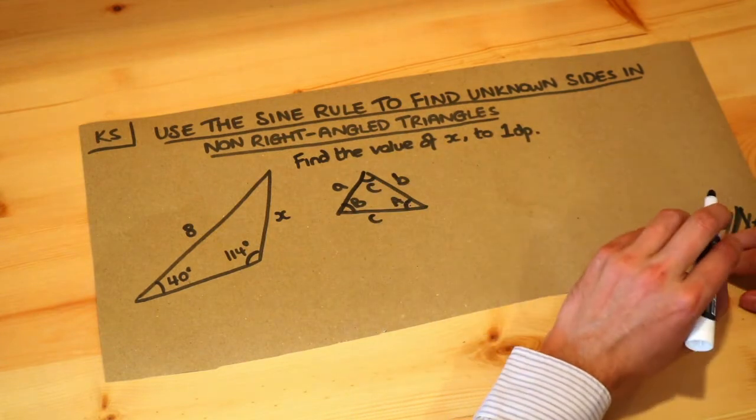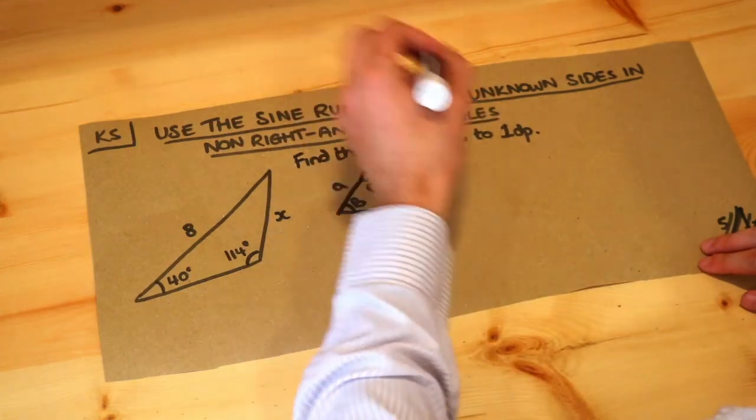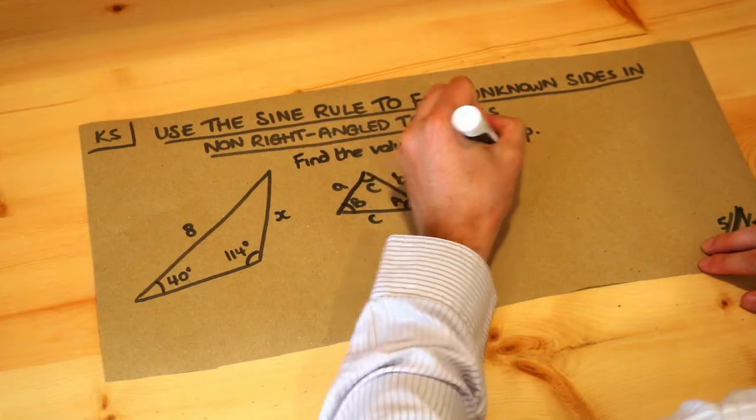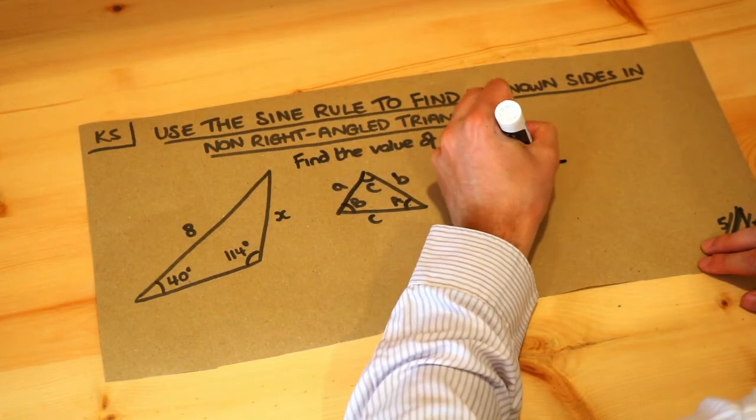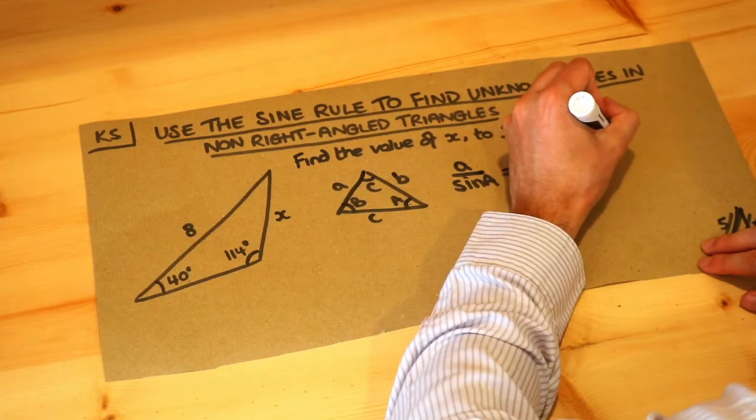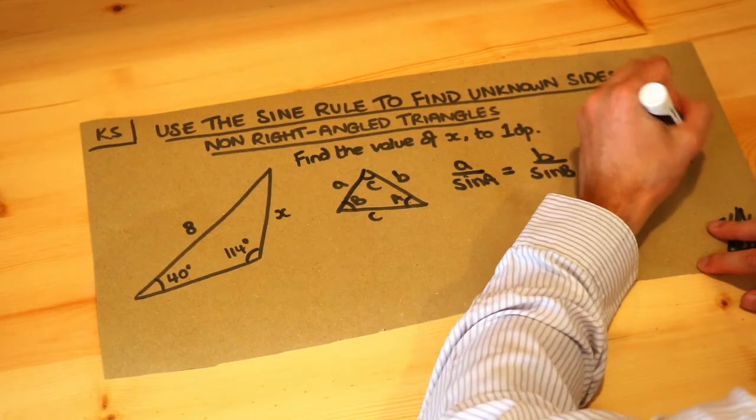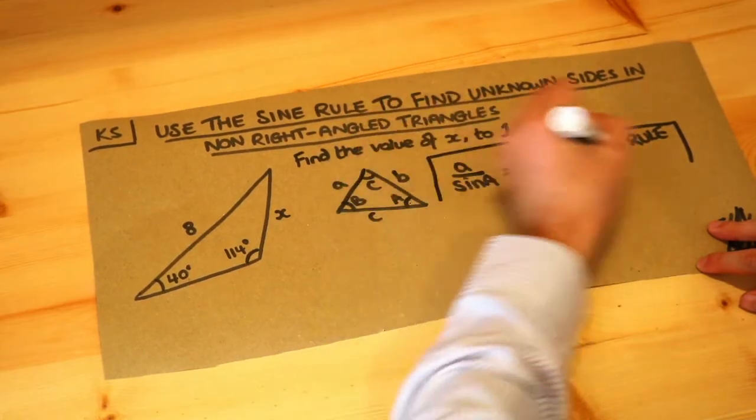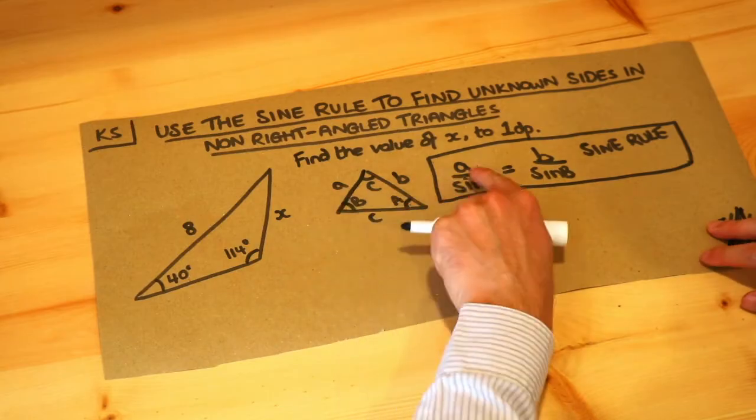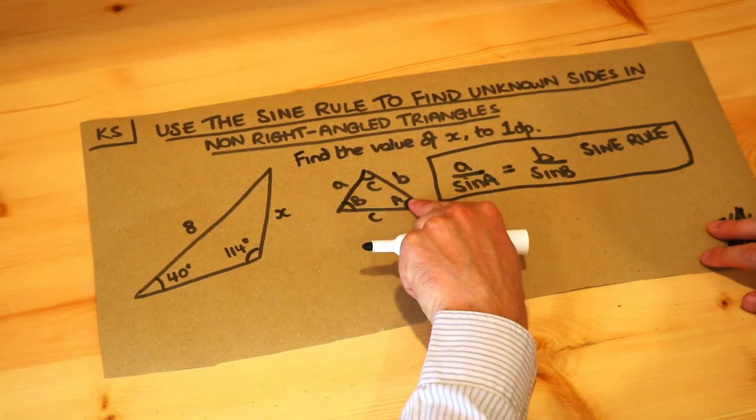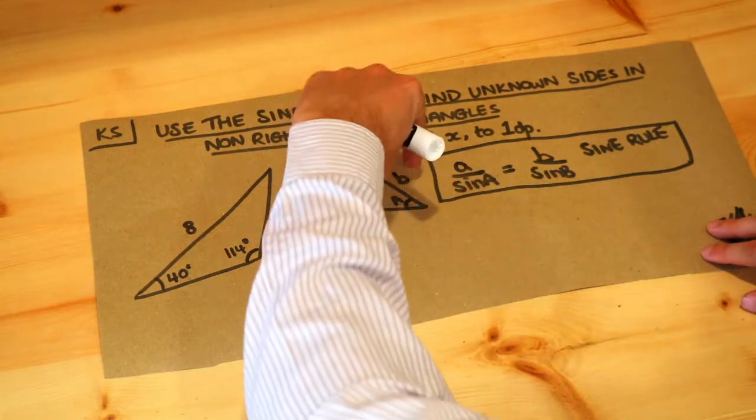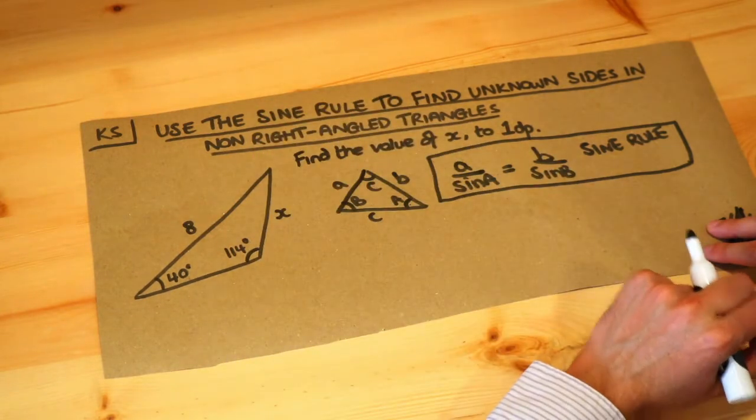If you've got a non-right-angled triangle, this is what the sine rule is: a over sine A is equal to b over sine of capital B. What that's basically saying is that if we take any side of this triangle and divide it by the sine of the opposite angle, we always get the same result.